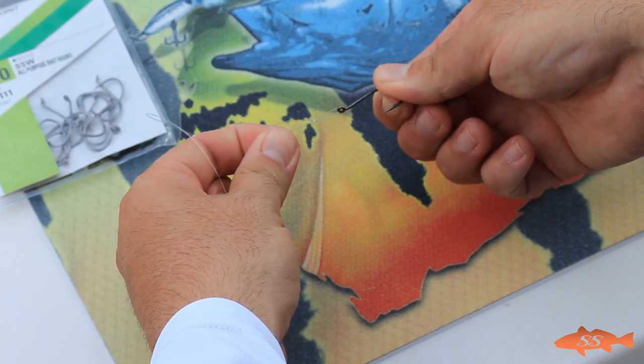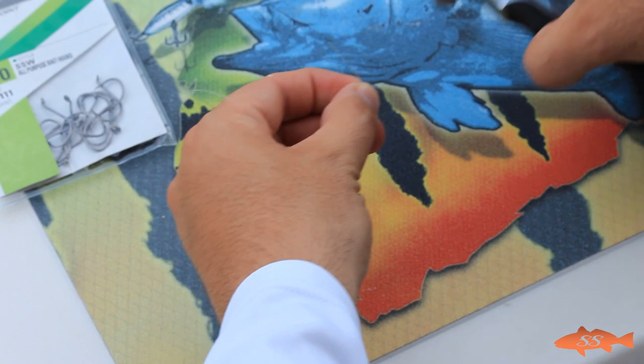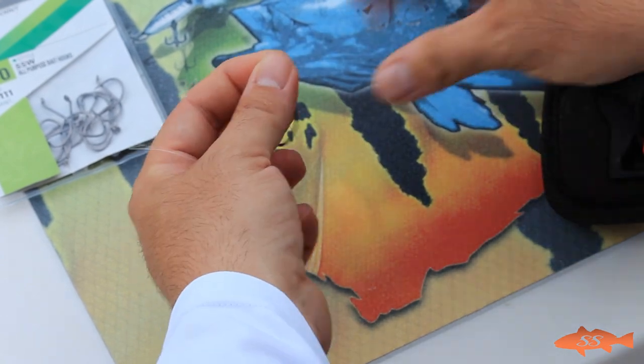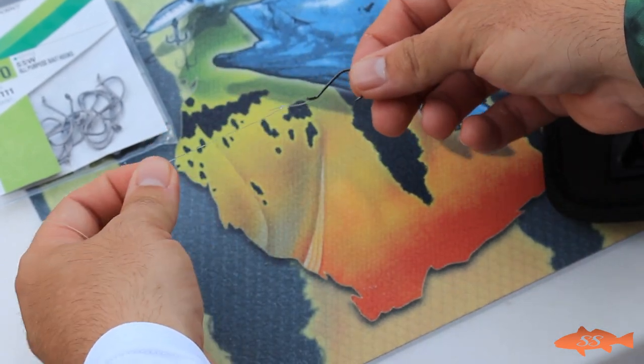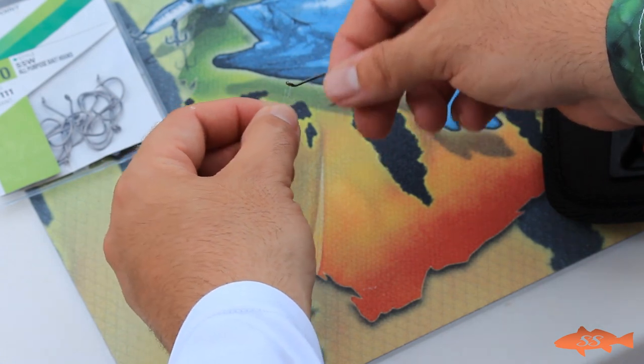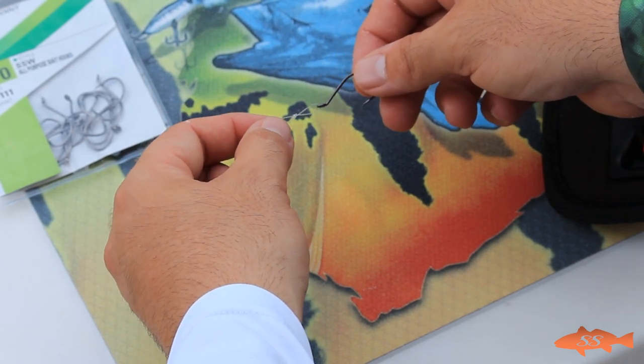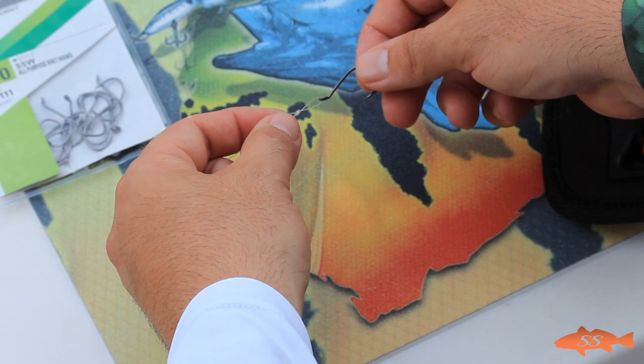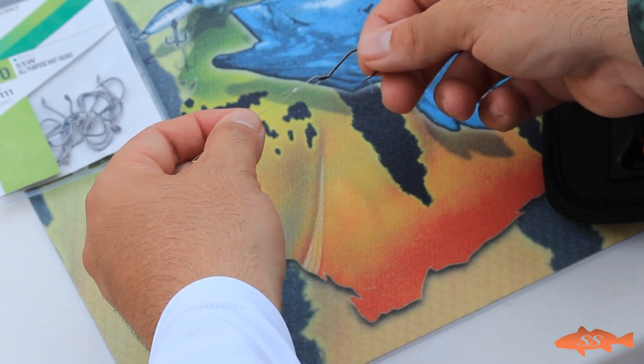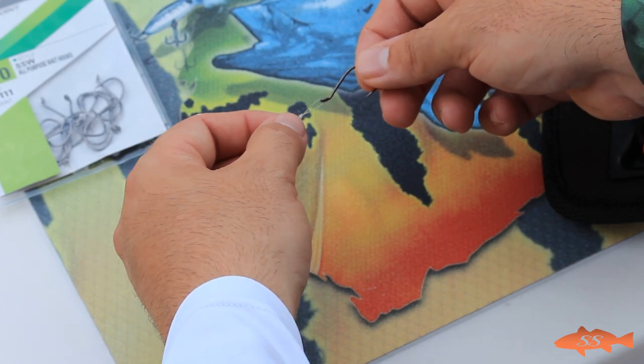Alright, and that's what you should have. Now you just want to trim your tag. And now you'll see that your hook has freedom to move freely. And it will give that natural presentation to both your artificial and live bait. And hopefully it will increase your strike ratios.